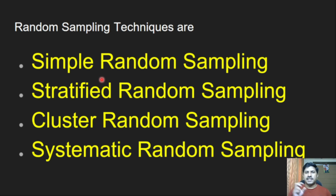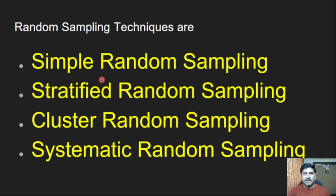Cluster random sampling means we make different clusters. For example, 10th class students will have different divisions — A, B, C, D, E. One cluster means one division. We can select any one division from the 10th class, and it will represent the whole 10th class. That is cluster random sampling.